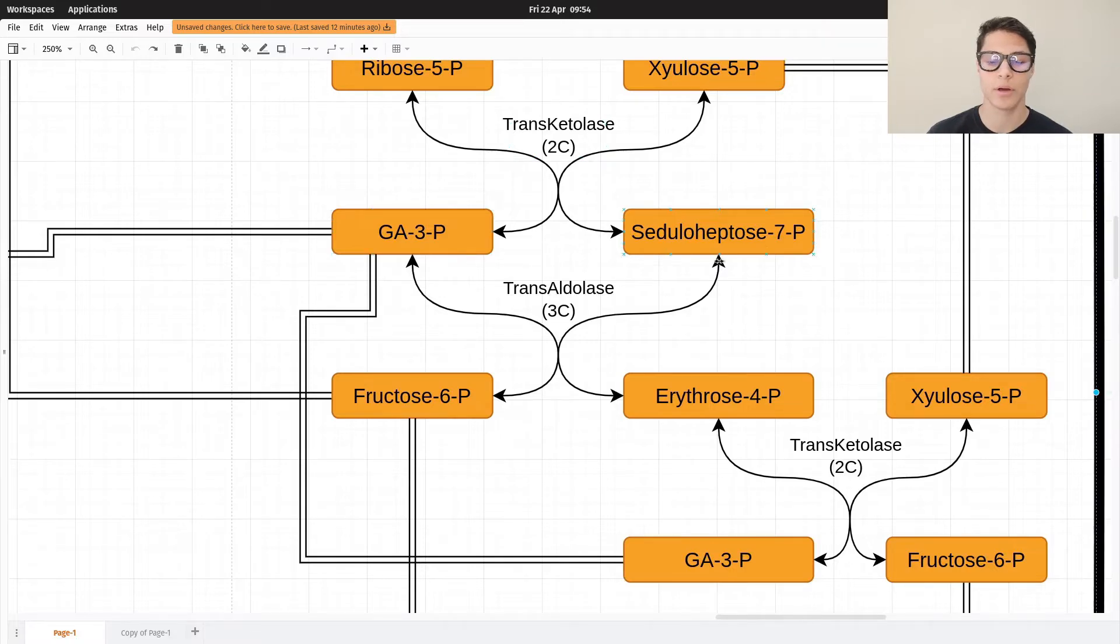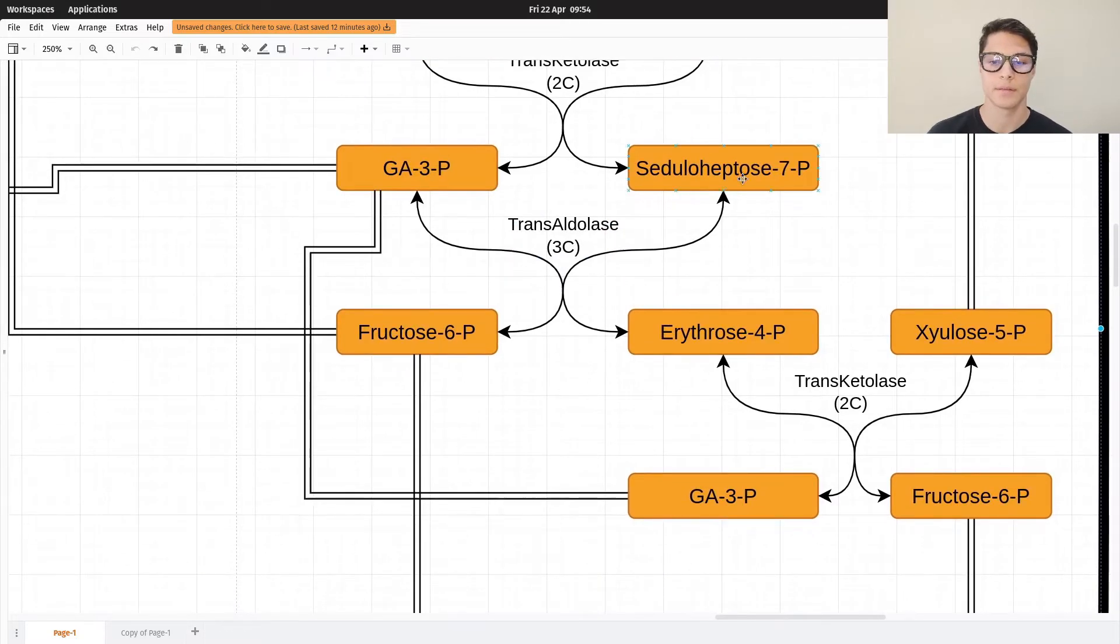Then these two get combined together via transaldolase. This time we transfer three carbons from here to here, and we get fructose 6-phosphate and erythrose 4-phosphate.